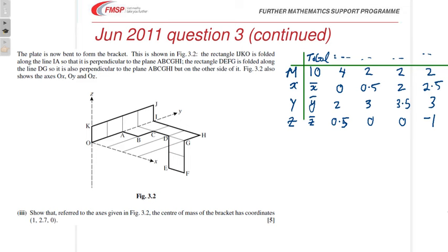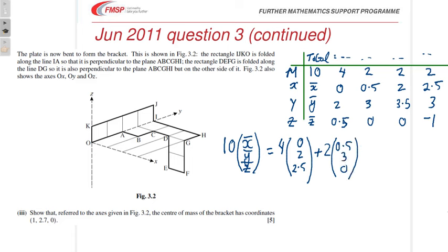And then, a rerun of part 1 but with three dimensions. So, we've got 10 x-bar, y-bar, z-bar is equal to 4, let's be careful copying this down, 0, 2, 0.5 plus 2, 0.5, 3, 0, plus 2, you can see what I'm doing, I'm just putting the values in from the table, plus 2, 2.5, 3, -1. Right, combine all those vectors and we get 10, 27, 0.